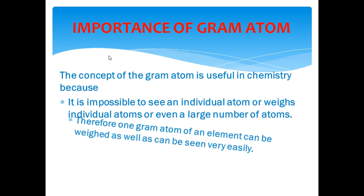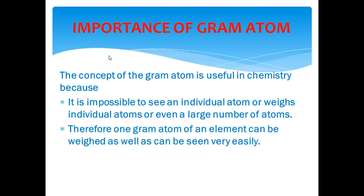But when we measure gram atom of a substance, then we can weigh as well as can see them very easily. For example, one gram atom of iron is equal to 56 gram. This amount can be seen as well as can be weighed.